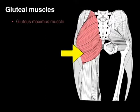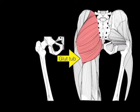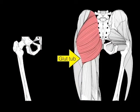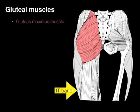These muscles go down and insert on two different areas: the gluteal tuberosity, which is the region on the back of the femur highlighted in purple, and also to the iliotibial band of fascia, which courses all the way down the thigh and stops at the arrow.